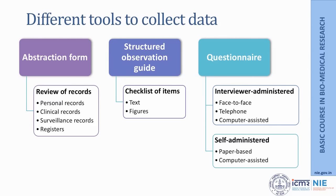Third and most importantly, the tool used most commonly is a questionnaire, where we talk to the person and get information. Questionnaires can be divided into two kinds: interviewer-administered, where the data collector administers the questions to the respondents — which could be done either face to face, on the telephone, or using computer-assisted technologies. Questionnaires could also be self-administered if the study participants can read and write and are knowledgeable enough to understand what the investigators want. These could be either paper-based or computer-assisted self-administered questionnaires, which can help respondents directly enter their information into a computer database.